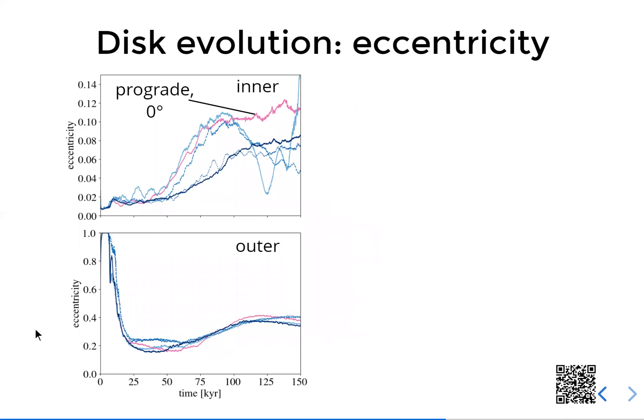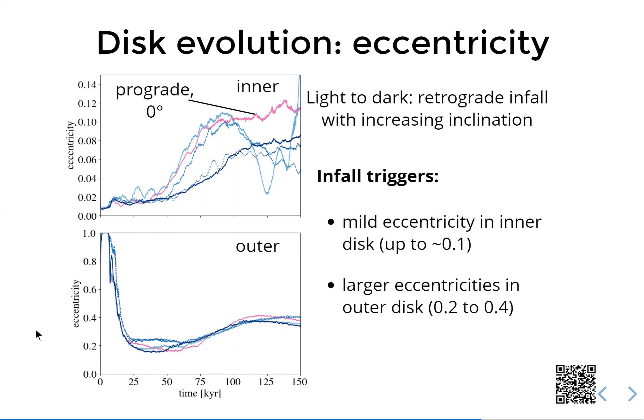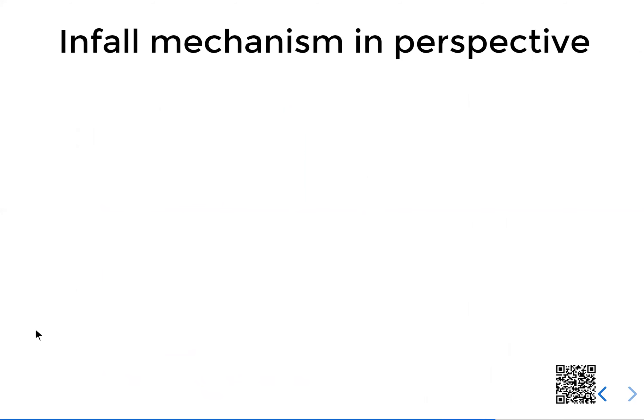But what about the observability? How can we distinguish this from other origins of misalignment? I think in this context the eccentricity might actually help. We find in our model that you have milder eccentricities in the already-existing inner disk, while the outer disk newly forming through the capture event shows much larger eccentricities. This might be measurable by looking at CO channel maps, and could potentially be a test of whether misalignment is due to infall or another cause.